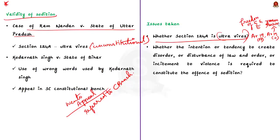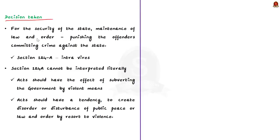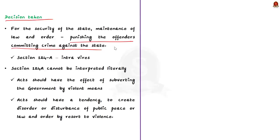These issues were before the Supreme Court. On the first issue, the Supreme Court held that for the security of the state, maintenance of law and order is the very basic consideration, and maintenance of law and order involves punishing offenders committing crimes against the state. In a democratic nation, the right to freedom of speech and expression should be fully protected, but some restrictions are necessary for the safety and integrity of the state. Accordingly, the Supreme Court held that Section 124A of the Indian Penal Code was intra vires the Constitution of India — meaning it is constitutional.